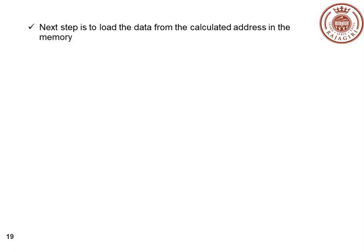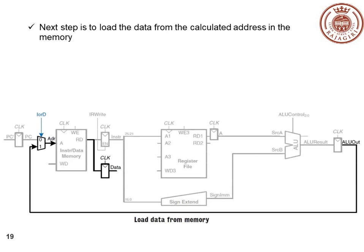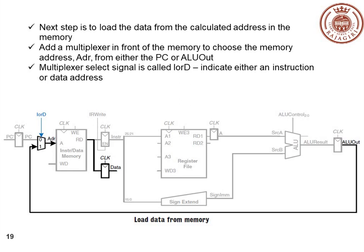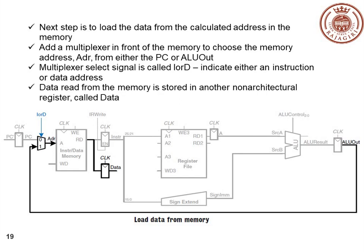The next step is to load data from the calculated address. The calculated address in ALU out is fed to the instruction/data memory through a multiplexer. The multiplexer select signal is called IorD — if it is I that means instruction, if it is D that means data. Data read from the memory is stored to another non-architectural register called Data.